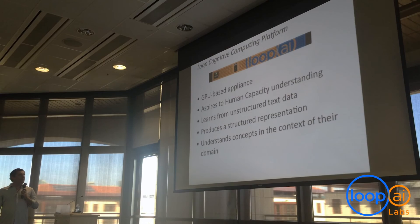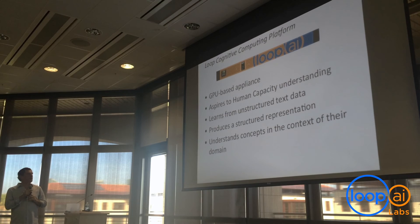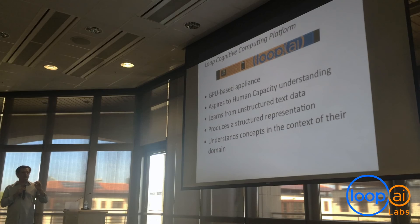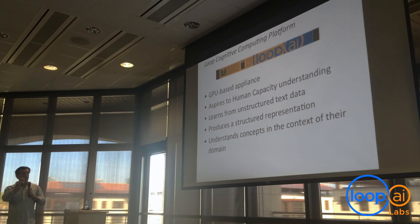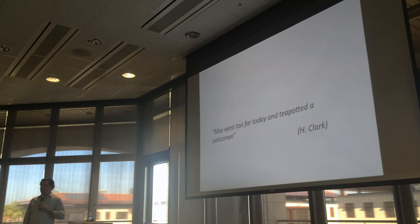Just to give a little plug: the Loop cognitive computing platform is something that aspires to do this exact human-capacity understanding. It's a GPU-based appliance that we release out to companies, and what it does is learn from unstructured text data, produce a structured representation from that, and understand concepts within the context of the domain they are happening in — mostly based on the principles we've been discussing. We'll just end it there — any questions?